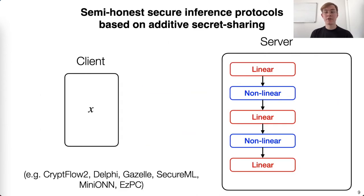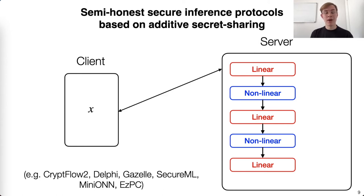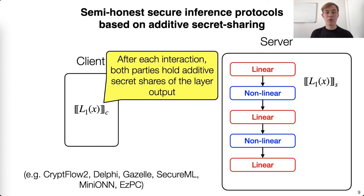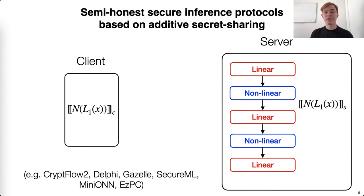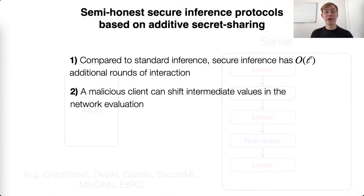With the structure of a neural network in mind, let's look at how semi-honest secure inference protocols work at a high level. Many popular secure inference protocols, such as Gazelle, Delphi, Cryptflow, and some others, evaluate the network layers one at a time using additive secret sharing. For each layer, the client and server will interact, and at the end of the interaction, both parties will hold additive secret shares of the layer output. This continues for each layer of the network until the server reveals its share of the network output to the client. Notice that compared to standard inference, secure inference has O(L) additional rounds of interaction, where L is the number of layers in the network, and a malicious client can shift intermediate values in the network evaluation due to the properties of additive secret sharing.